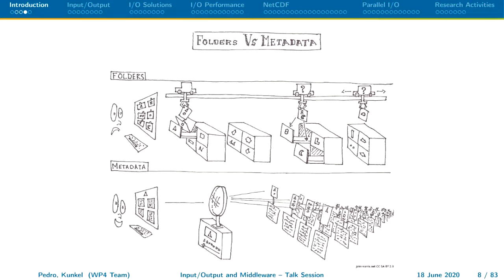To help the next generations — and we're already experiencing this — that's one of the main reasons for NetCDF. We have this battle between folders and metadata. The idea is: when I have a file system and I search for a file, the file system has to go through all those files to find the one I need. This picture shows how hard it is to go through all those files to find a specific one.